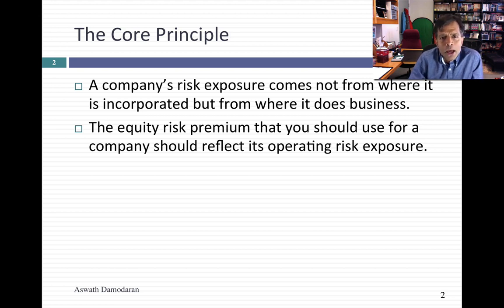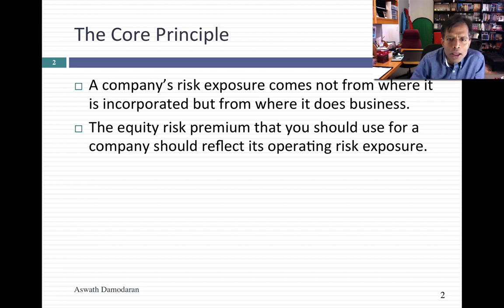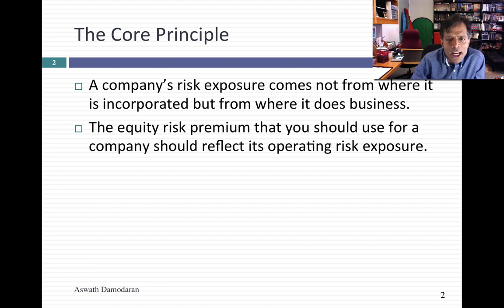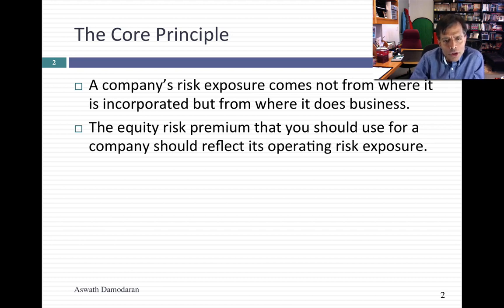Here is the core principle: I think the equity risk exposure of a company should not come from where it's incorporated, but from where it does business. In other words, if you're a U.S. company that gets 90% of your revenues in Brazil, I have to bring in Brazilian country risk when I think about how risky you are as a company. That's the principle that's going to govern how I think about estimating equity risk premiums for an individual company.